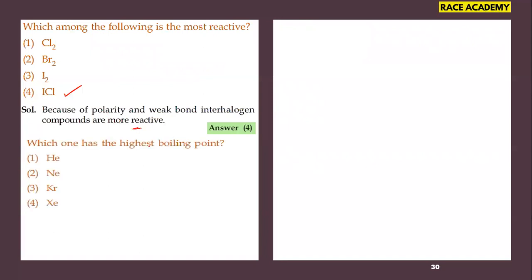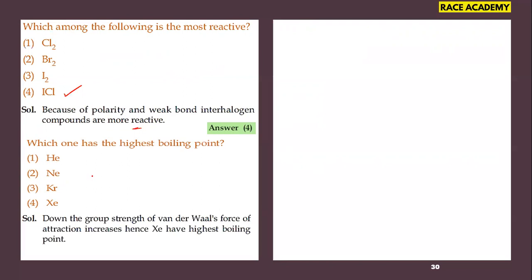Which noble gas has the highest boiling point — helium, neon, krypton, or xenon? Going down the group, the strength of Van der Waals forces of attraction increases. Therefore, xenon has the highest boiling point, and moreover xenon has the highest atomic mass among the given options.